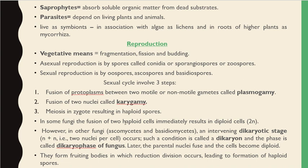In some fungi, fusion of two haploid cells immediately results in a diploid cell. But in others, such as Ascomycetes and Basidiomycetes, a dikaryotic stage (n+n, meaning two nuclei per cell) occurs. This condition is called a dikaryon and the phase is called the dikaryophase of the fungus. Later the nuclei fuse and the cells become diploid again, forming fruiting bodies where haploid spores are produced.